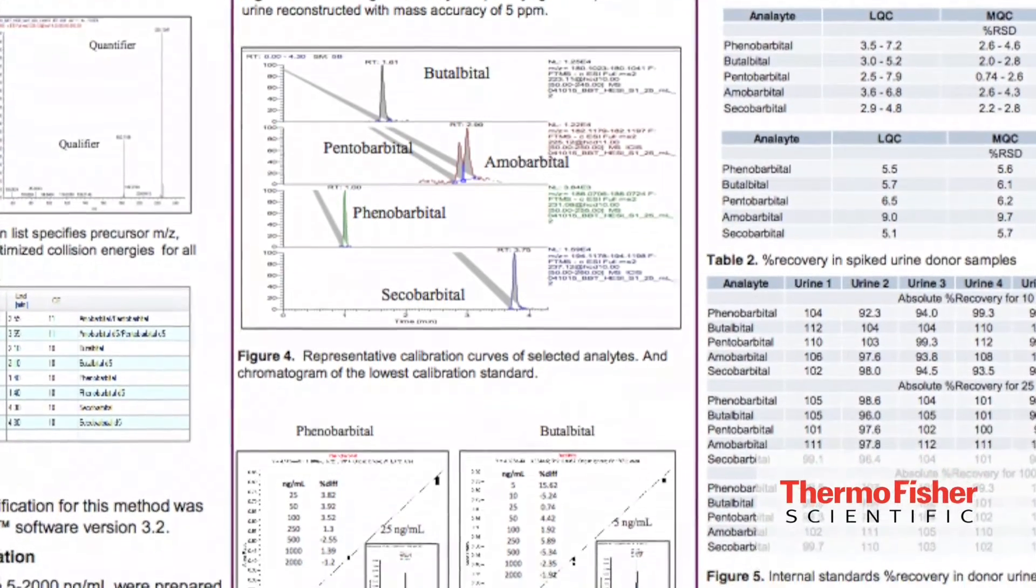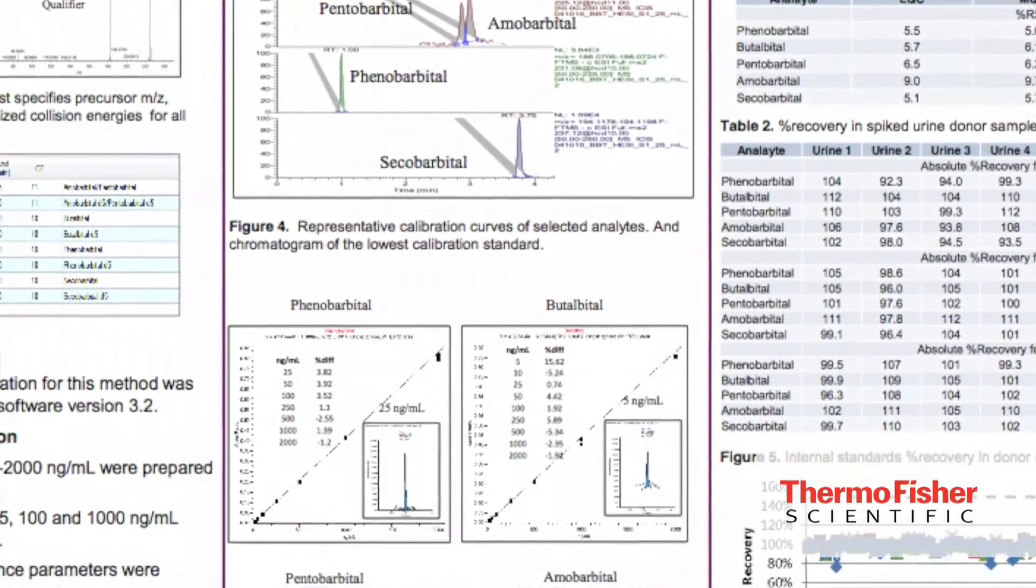The limit of quantification for the method was 5 ng/mL for each barbiturate, except for phenobarbital, which was 25 ng/mL.